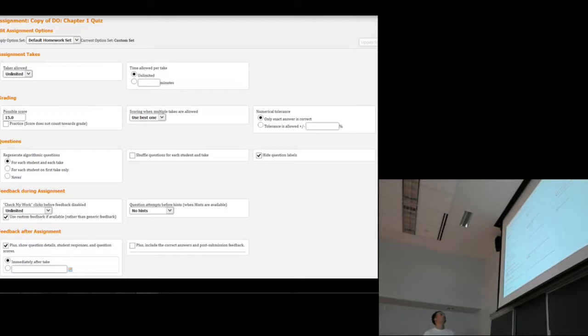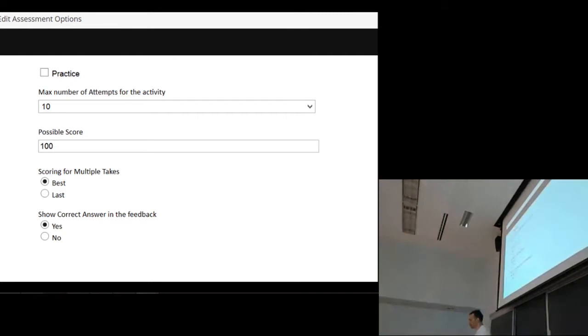For the post tests, called copy of do chapter whatever quiz, you also got unlimited takes and time. However, these will have new algorithmic questions on each take, so you can't just memorize the correct answer and keep going through. You will get no hints on the post test after the first attempt, but everything else is pretty much the same.